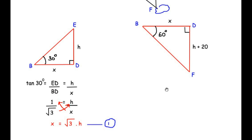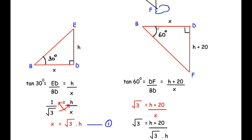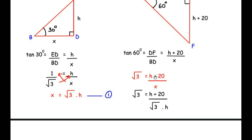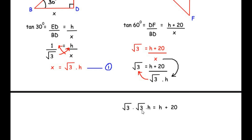Since h = 10 meters, the total height of the cloud from the surface of the lake is h + 10 = 10 + 10 = 20 meters. So the height of the cloud above the lake surface is 20 meters.